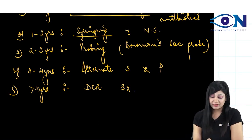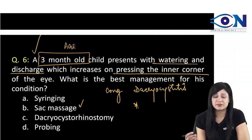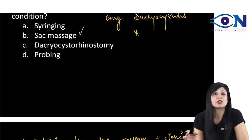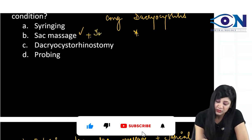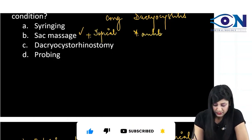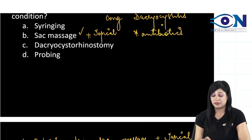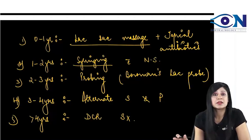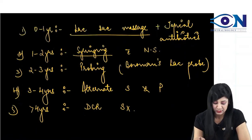If you look by this, they have told you that the patient is 3 months, so up to 1 year, we have to do sac massage. They have not given you the antibiotics. If they would have given, that would have been better. Along with this, we also have to add topical antibiotics. Very important question. All the details about the treatment, then the Citelli's bone punch along with the Baumann's lacrimal probe, this is also important.